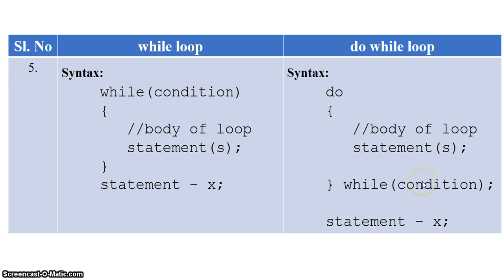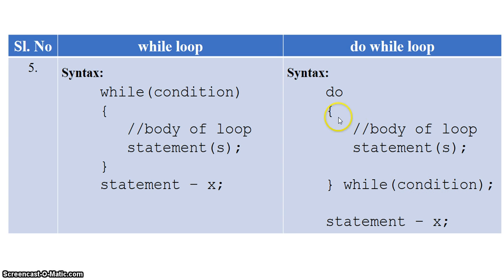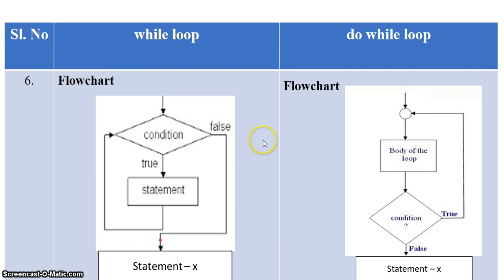This process continues till the condition is true. Once the condition is false, program execution continues from the next statement. So in do-while loop, even though the condition is false for the first time, the body of do-while is executed at least once. These are the flow charts of while and do-while loop.